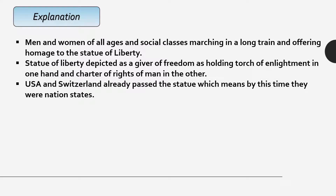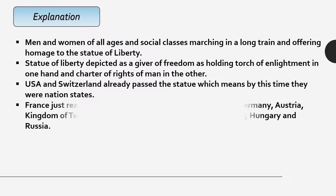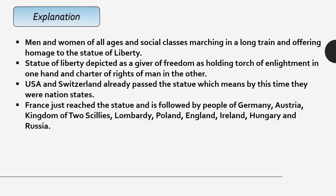In this long trail, we find that the USA and Switzerland have already passed the statue, which means by this time they were already nation-states, which is historically accurate. France has just reached the statue and is followed by people of Germany, Austria, Kingdom of Two Sicilies, Lombardy, Poland, England, Ireland, Hungary, and Russia. A key question is how we can identify these people — they can be identified through their flags.